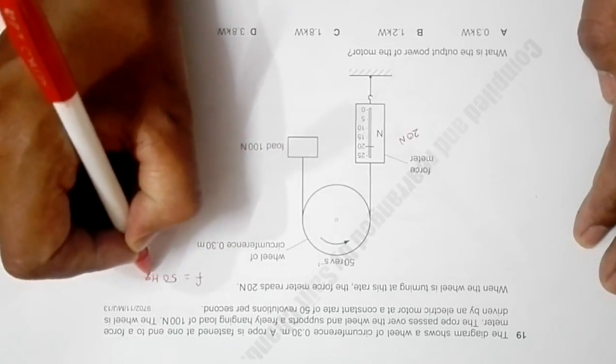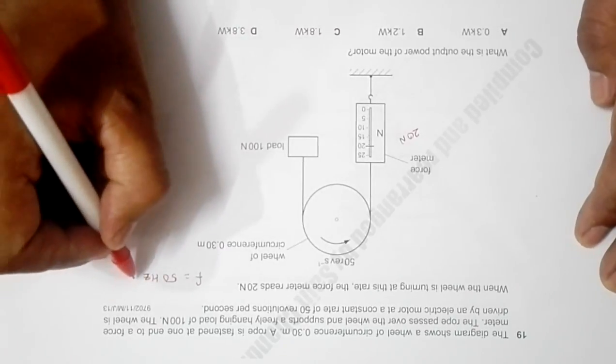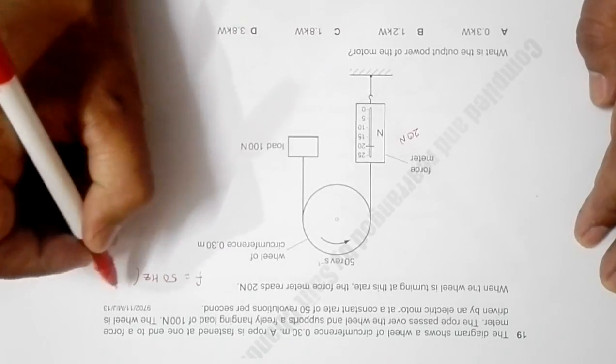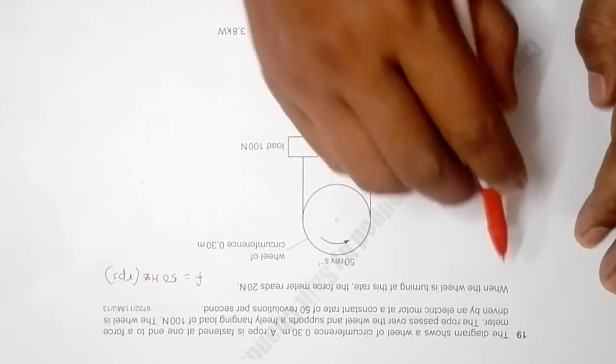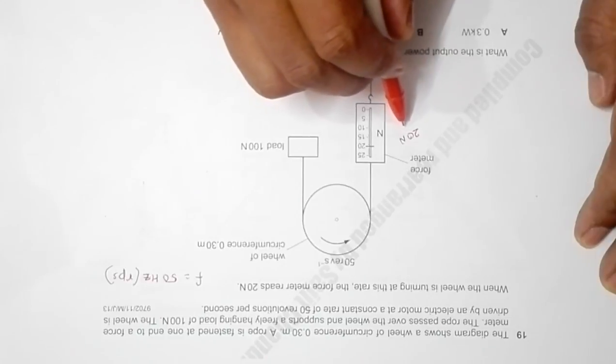50 Hertz, which we can also say in other words as revolutions per second or RPS. When the wheel is turning at this rate, the force meter reads 22, as I have already mentioned.